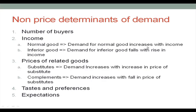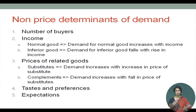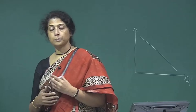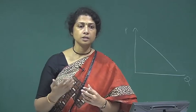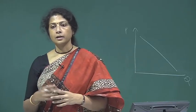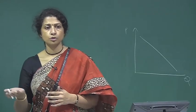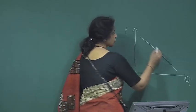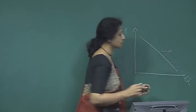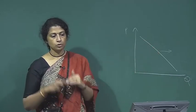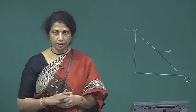Let us see some examples. The first non-price determinant of demand is the number of buyers. Take a college campus with a bookshop: if the college increases the number of seats and more students join, the demand for books is going to go up. The demand curve shifts to the right. So, an increase in the number of buyers increases the market demand curve.